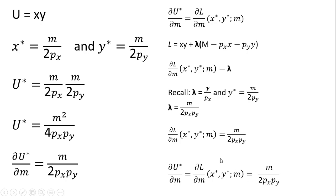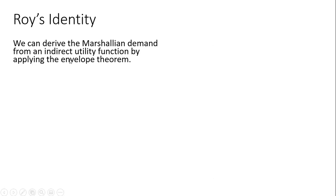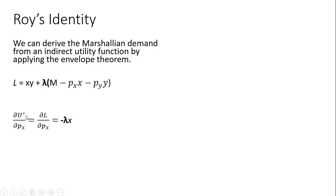Now let's move on to Roy's identity as an application of this. Roy's identity allows us to derive the ordinary Marshallian demands from an indirect utility function by an application of the envelope theorem. Here's the Lagrangian setup. The envelope theorem tells us that taking the partial derivative of the indirect utility function with respect to the price of good x equals the partial derivative of the Lagrangian with respect to the price of good x evaluated at its optimal point.